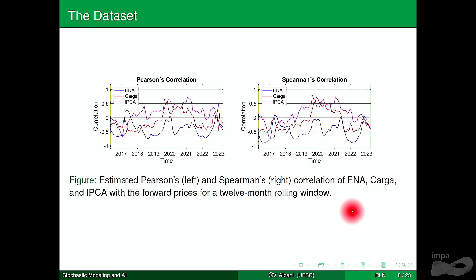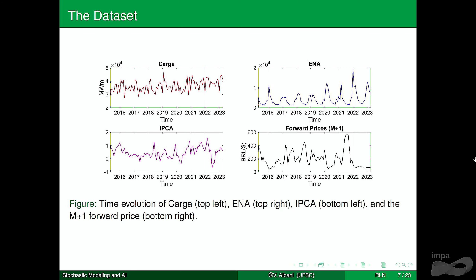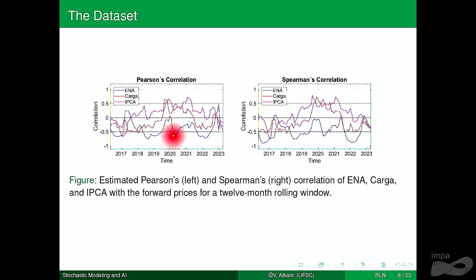This is just the analysis of the correlation of these co-variables with prices. We see that, for example, the level of the reservoirs is basically negatively correlated with prices. But the others show a lot of fluctuations. We had the COVID pandemic, which caused some disruption in the datasets. Around that period, the correlation with INA — related to reservoir levels — became almost zero or even positive at some points. That should be negatively correlated: the larger the reservoir level, the lower prices should be.